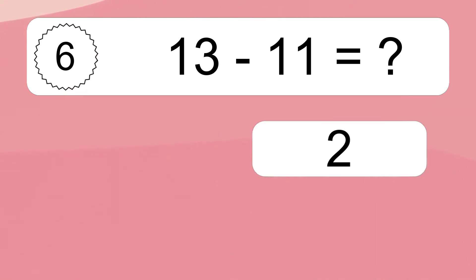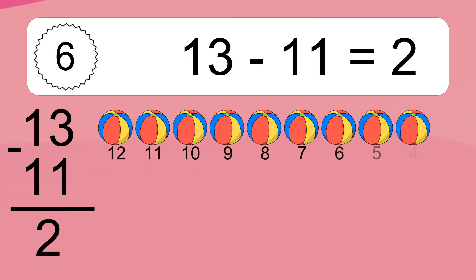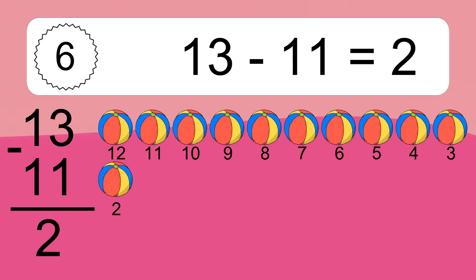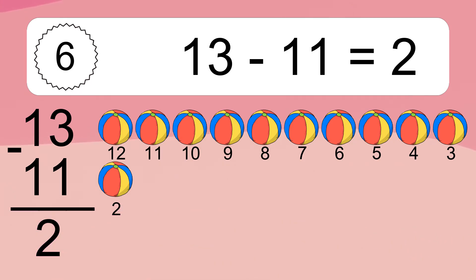13 minus 11 equals 2. Let's count it: 12, 11, 10, 9, 8, 7, 6, 5, 4, 3, 2.